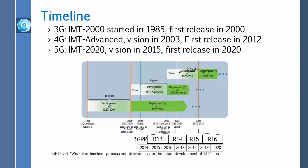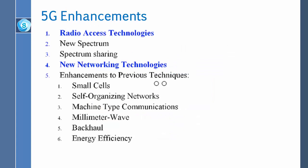For 5G, they are going to change several things: the radio access technology, acquire new spectrum, share spectrum they don't own, introduce new networking technologies, and enhance previous techniques. Small cells will become smaller, self-organizing networks will become more autonomous, machine type communication will be added, millimeter wave will be used, backhaul will improve, and energy efficiency will improve.